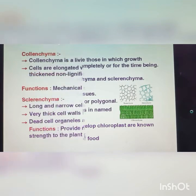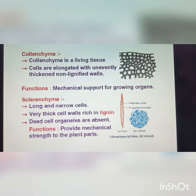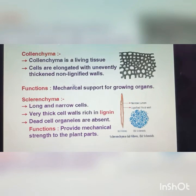Next, colenchyma. Colenchyma is a living tissue. Parenchyma is also a living tissue, and colenchyma is a living tissue. Cells are elongated with unevenly thickened walls. It has lignified walls and provides mechanical strength. The function of colenchyma is mechanical support for growing organs.